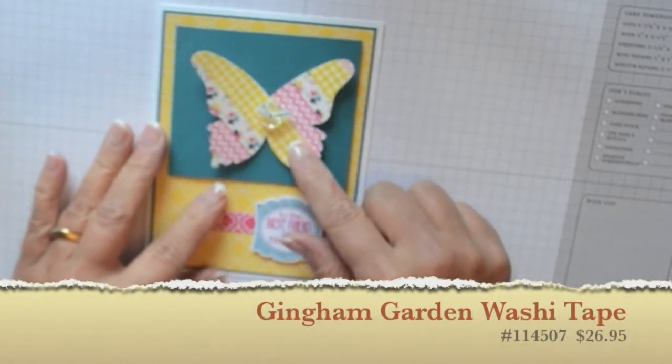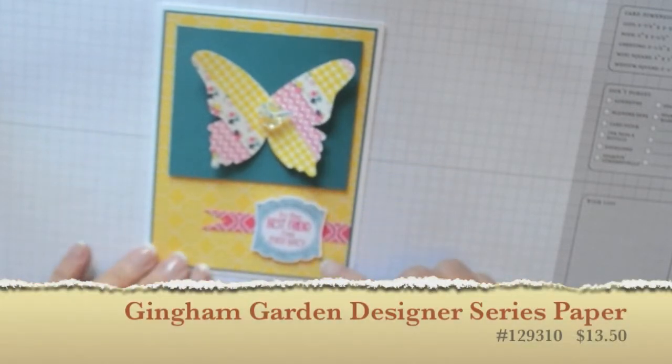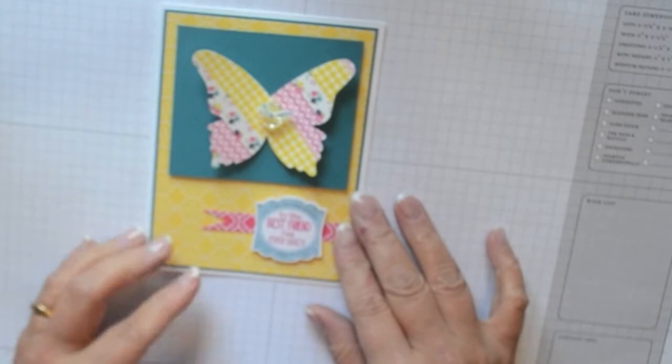I want to show you how you can create this butterfly using our new washi tape. This is the Gingham Garden designer washi tape and it's really pretty and it matches the Gingham Garden designer paper. So it all goes together which is really nice. So let's get started and I'll show you how to do this little butterfly.